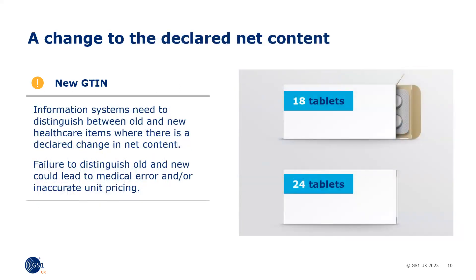Net content is defined as the amount of the consumable product of the trade item contained in the package as declared on the label, which may include net weight, volume, count, or units. Any change — increase or decrease — in the legally required declared net content that is printed on the pack requires a new GTIN. The level at which the net content change occurs requires a new GTIN, and all higher levels of the packaging hierarchy impacted shall have a new GTIN assigned. Information systems need to distinguish between old and new healthcare items where there is a declared change in net content. Failure to distinguish old and new could lead to medical error and or inaccurate unit pricing.